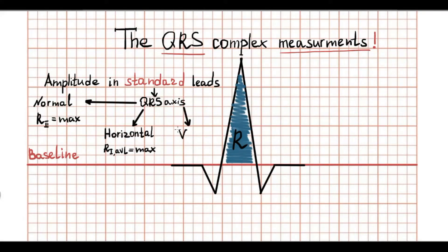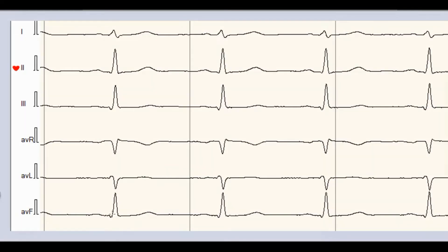But in the case of vertical electrical position of the heart, the maximal R wave is located in third standard lead, and biphasic complex can be found in first standard lead.